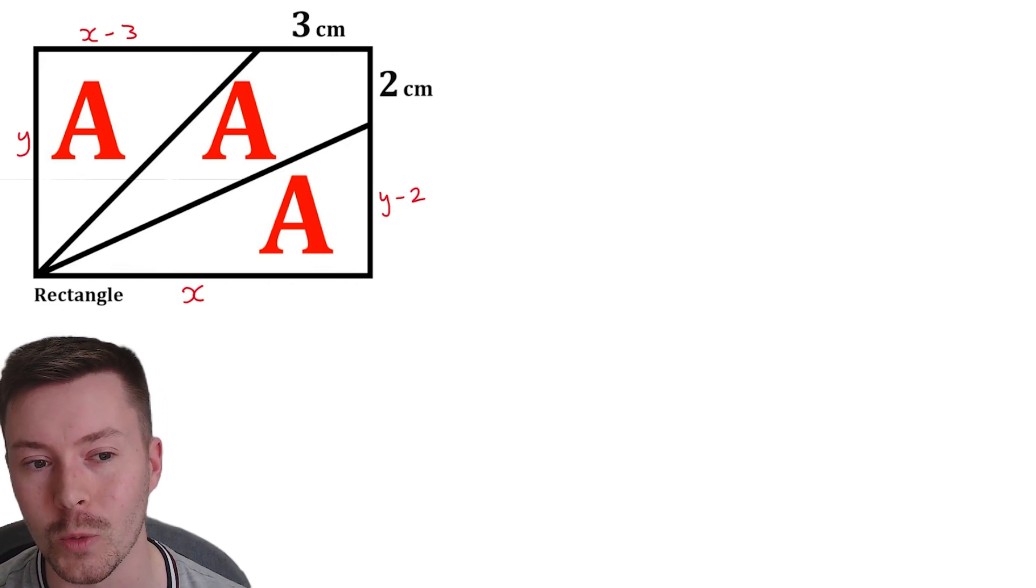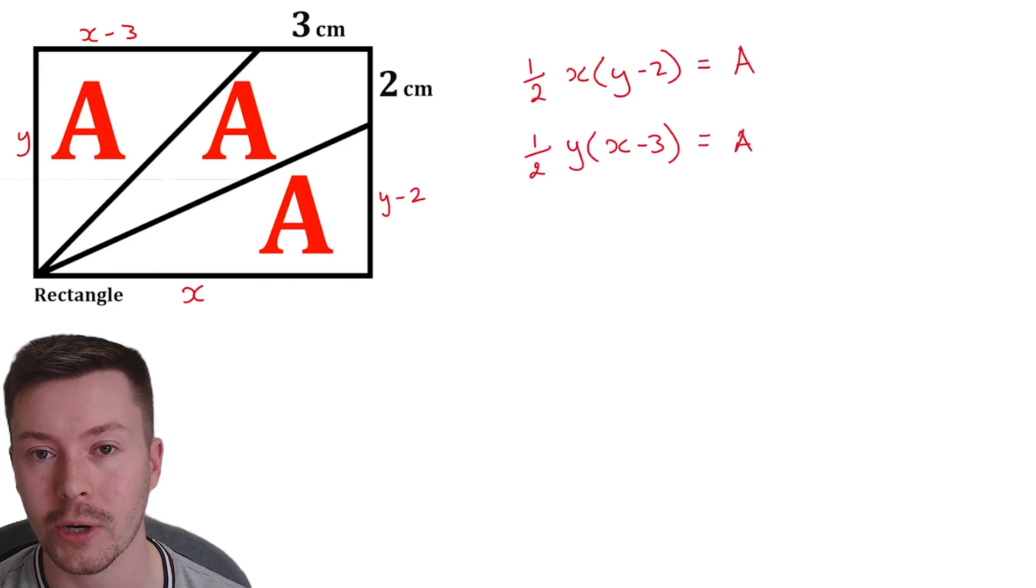What we can then do is we can start working out the area of the triangles in terms of X's and Y's. So we get a half X brackets Y minus two is equal to A, and a half Y brackets X minus three is also equal to A, because that is the area.